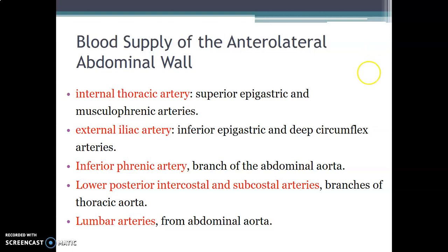The anterolateral abdominal wall is also supplied by the inferior epigastric and deep circumflex iliac arteries, which come from the external iliac artery — a branch of the common iliac. We also have inferior phrenic arteries supplying the wall, and these come from the abdominal aorta.